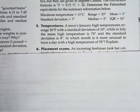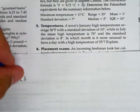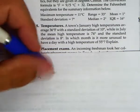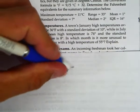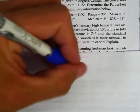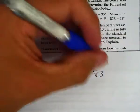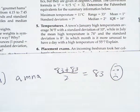Anna got an 83 on both, so she has an average of 83, so she doesn't qualify. No good.